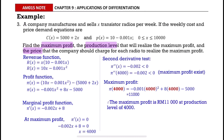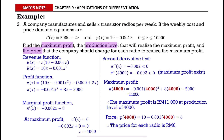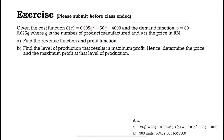Find the price by substituting 4,000 into the price-demand equation. The price for each radio is 6 ringgit. Please submit this exercise before the class ends.